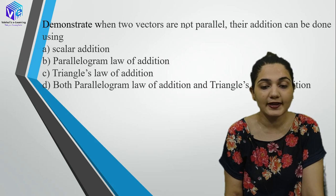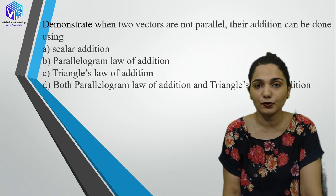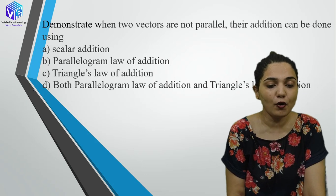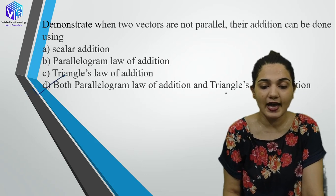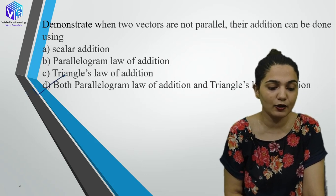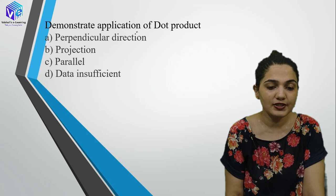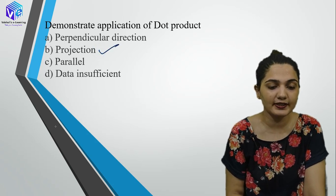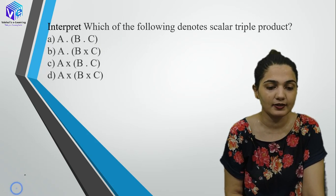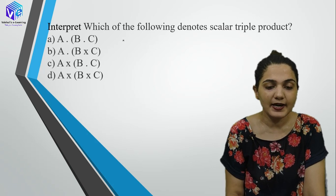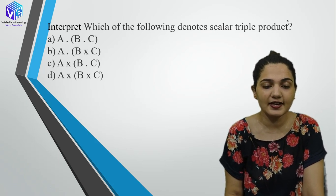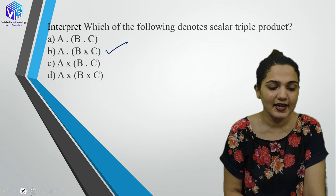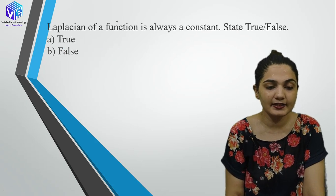Demonstrate when two vectors are not parallel: both parallelogram law and triangular law are used for vector addition. The application of dot product is to find out the projection. The scalar triple product is denoted as A·(B×C) — this you should remember.